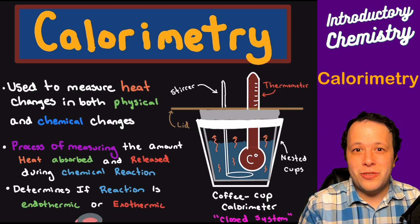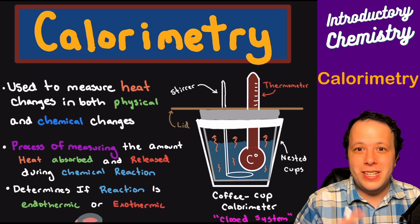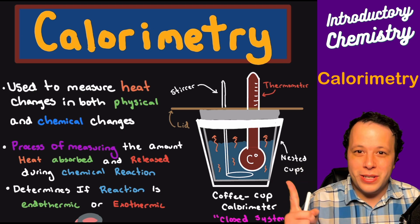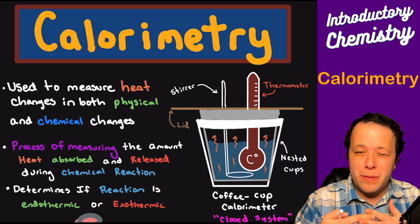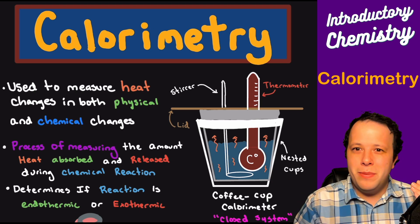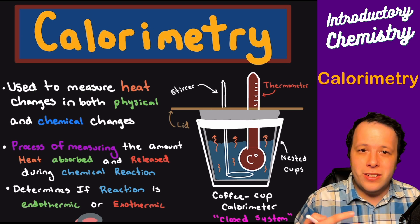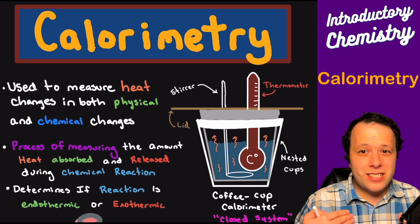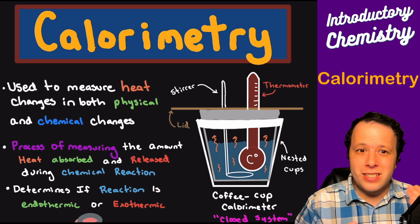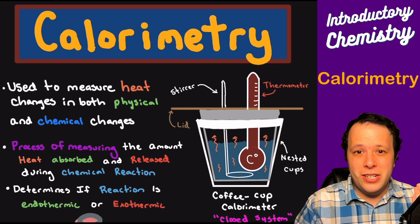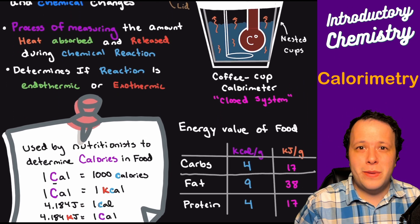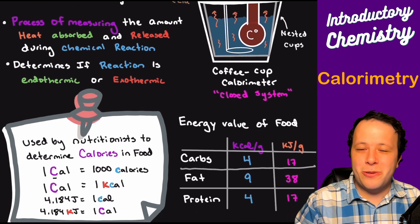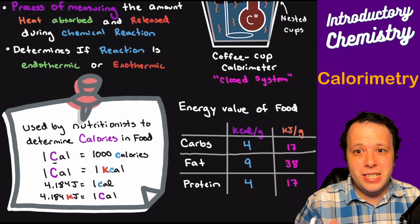It's very common in your chemistry course to use a coffee cup calorimeter, like the one I drew here, where on the inside you'll have all kinds of different chemicals — maybe mixed together, maybe mixed with water — to see how much heat is being transferred. For a very cheap method, it actually gives very accurate results, especially for determining if a reaction is exothermic or endothermic.